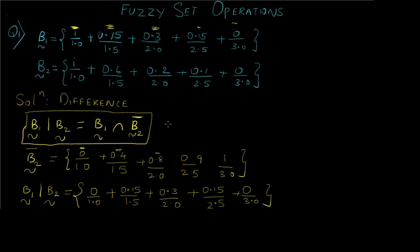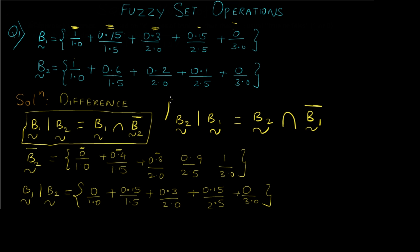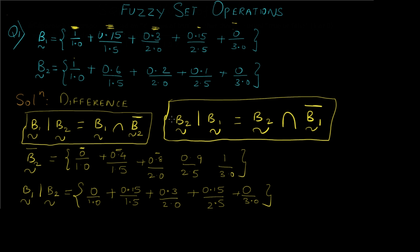Another version of this would be B1 subtracted from B2, which would be B2 intersection B1 complement. This is how difference works in fuzzy sets.